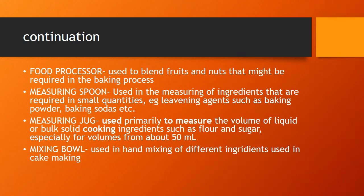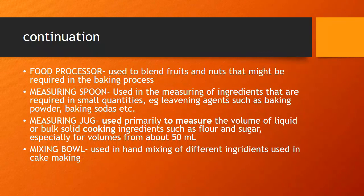A food processor works like a blender. It is used to blend hard nuts that may be required as an ingredient for the cake, and also to blend juices that might be needed in the cake-making process.